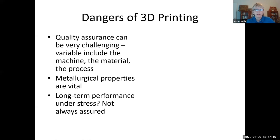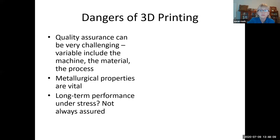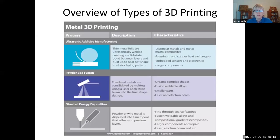The dangers of 3D printing: quality assurance can be challenging, and metallurgical properties are vital. You can't just assume everything is working — you have to be vigilant and use sensors to ensure the printer conditions stay within guidelines. Long-term performance under stress is not always assured. For those interested in AI and machine learning, this is a great opportunity to use deep learning to create simulations and models to predict behavior under different circumstances.